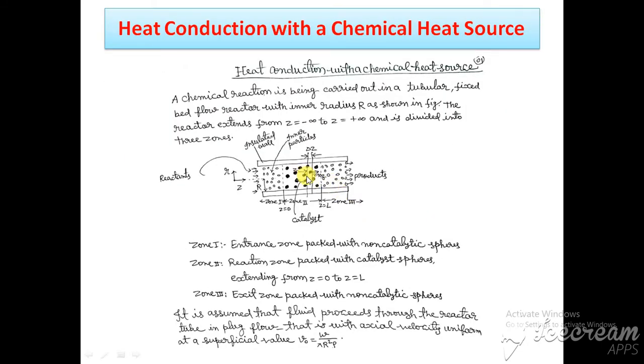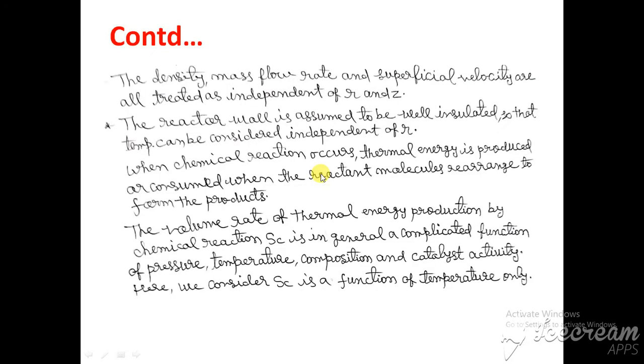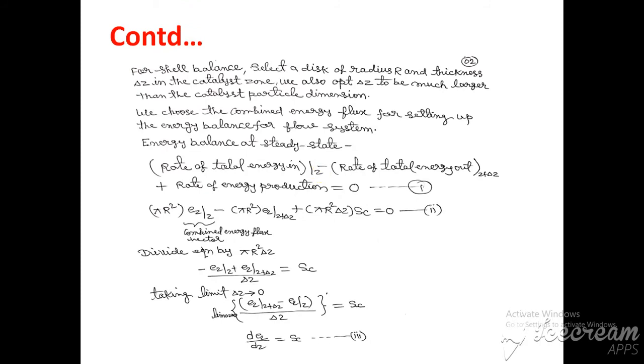This is z and this is z plus delta z. Rate of total energy in at z minus rate of total energy out at z plus delta z plus rate of energy production equals zero. This is the energy balance equation.